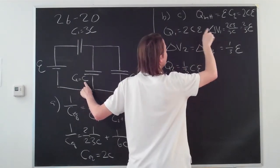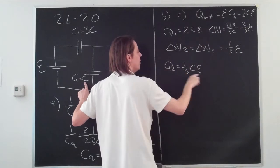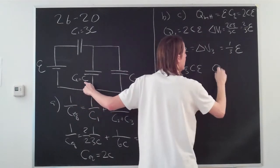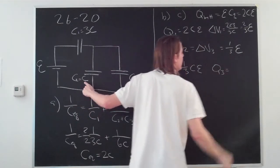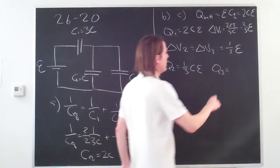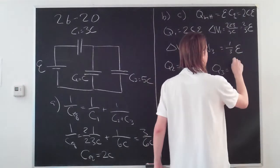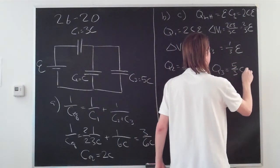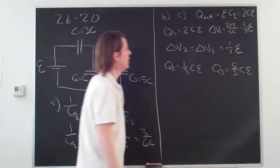And you start to compare up here. Q, this one is two CE, this holds a lot less charge, one-third CE. And then Q3, again, Q is just Cv, and the capacitance is 5C, times one-third E, so that's five-thirds CE. Alright?